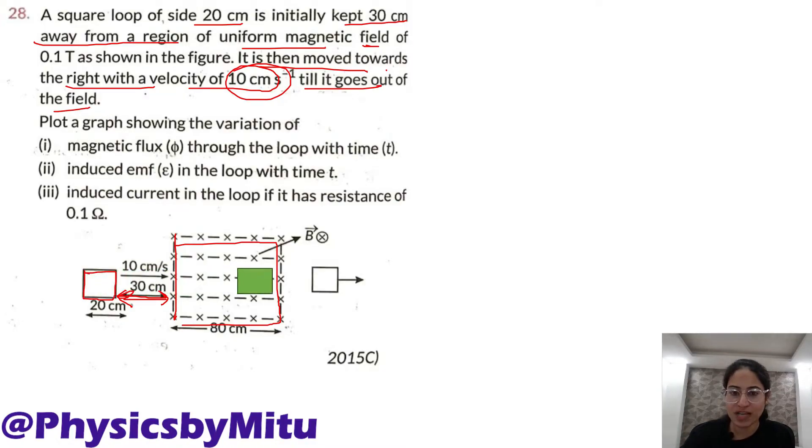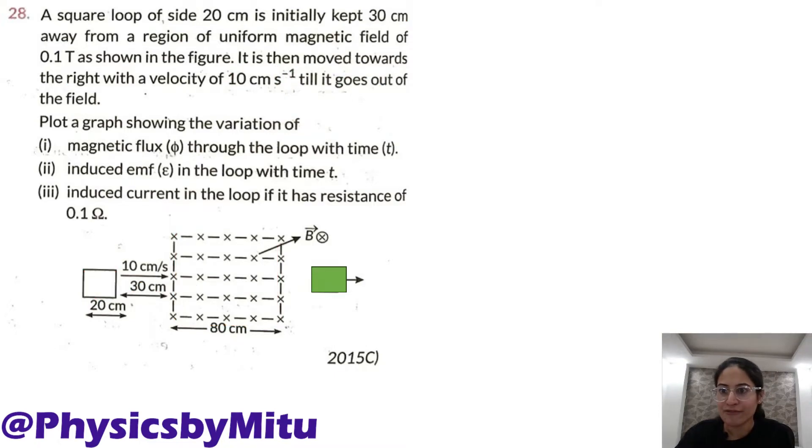This is moved out of the magnetic field region in the right direction. You have to plot a graph showing the variation of flux through the loop with time t, EMF with time t, and induced current with time t. So how to start?